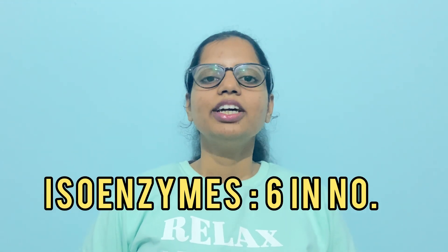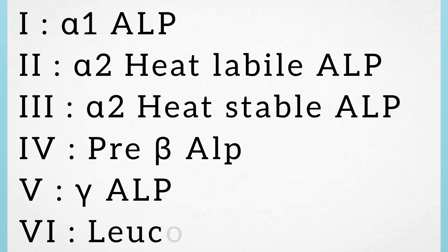ALP has a total of six isoenzymes. The first is alpha-1-ALP, the second is heat-labile alpha-2-ALP, the third is heat-stable alpha-2-ALP, the fourth is pre-beta-ALP, the fifth is gamma-ALP, and the last one is leucocyte-ALP.